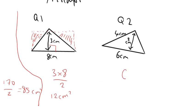So we're going to do six multiplied by two and then divide by two. So six multiplied by two is 12, and then divide by two is six centimeters squared.